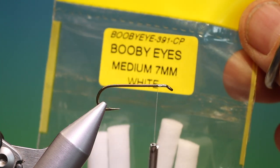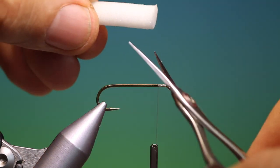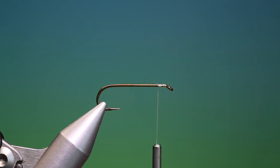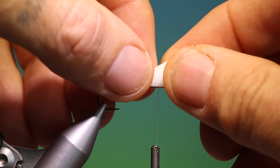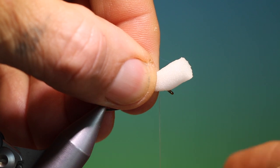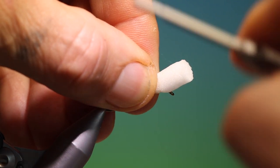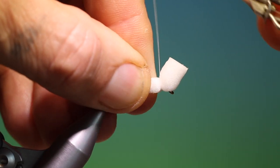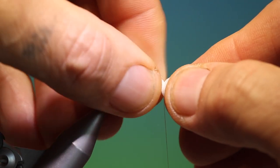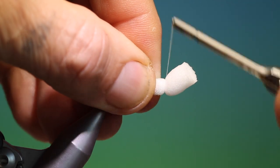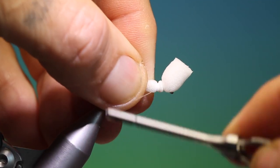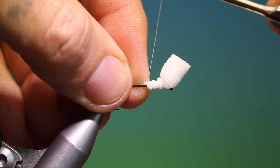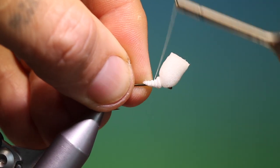We've got a seven millimeter white boobie eye, so we'll just cut this at an angle like so, bring this over the front, spin our tying thread anti-clockwise to give it a flat profile. We'll just go over. We can go a little bit further forward with that. We'll just go through the foam. This will give us the taper on the body.